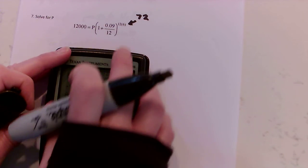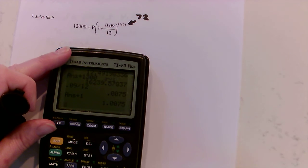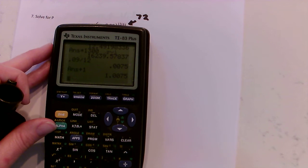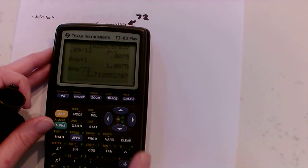Okay, 1.0075 is where I'm at and I'm going to leave that in the calculator. I'm going to raise it to the 72 power, so how do I do that? I hit my little triangle looking thing and I hit raise to the 72nd power.